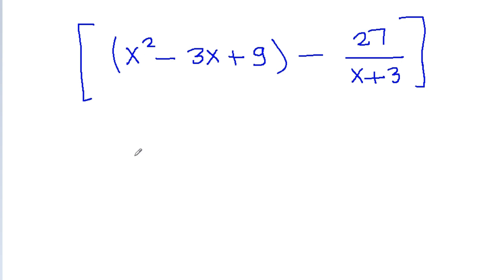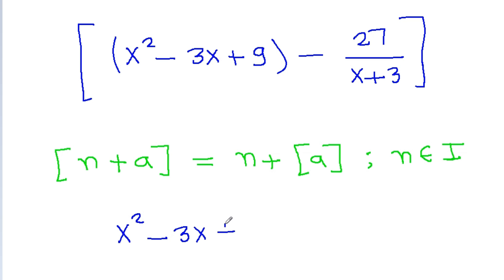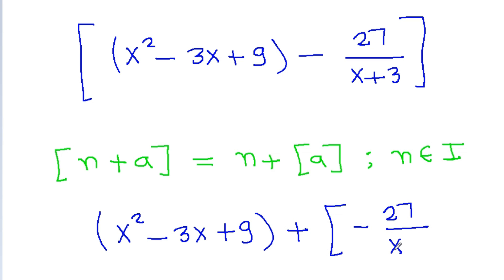We know that the floor function of any integer n plus a equals n plus the floor function of a, if n belongs to integers and x is an integer. So x² − 3x + 9 will be an integer, and we get x² − 3x + 9 plus floor(−27 / (x + 3)).